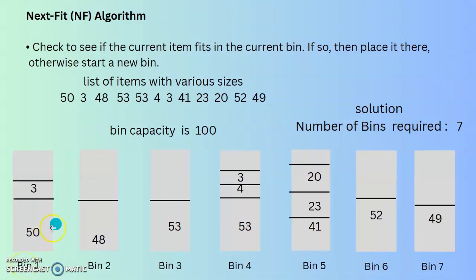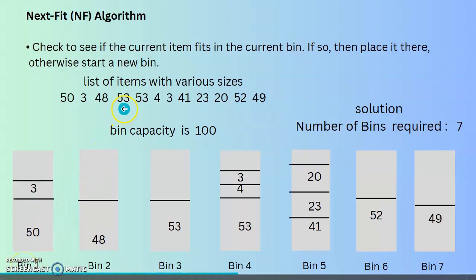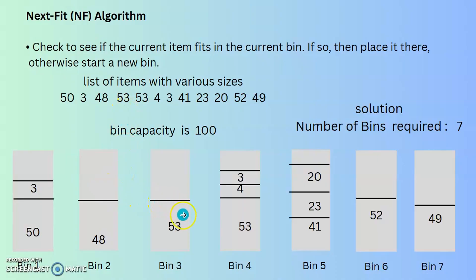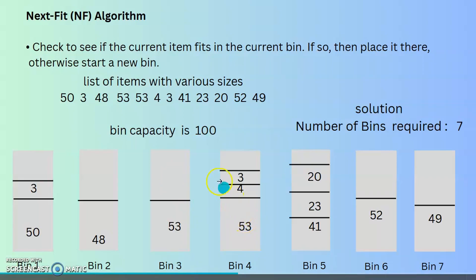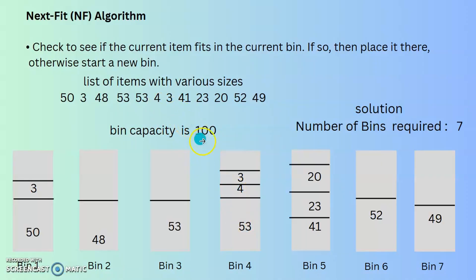Next item size 53 cannot be placed in the second bin, so we go to a third bin for 53. The next item is also 53, but it cannot be placed in the third bin because the maximum size is 100. So we go for a fourth bin for that 53. Items of size 4 and 3 can both be placed in the fourth bin. But 41 cannot be placed in the fourth bin.